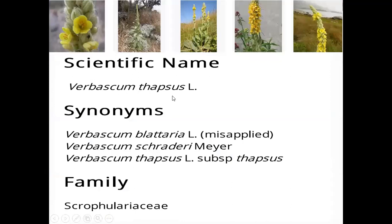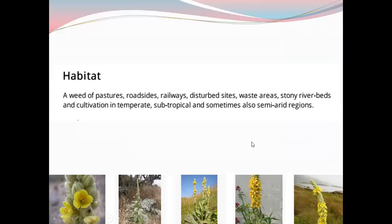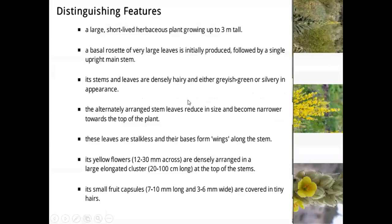Next is Verbascum thapsus, from the family Scrophulariaceae. It is used in many places in the world, including Portugal as its native habitat. Habitat: it is a weed of pastures, roadsides, railways, distributed sites, based areas, stones, and riverbeds.